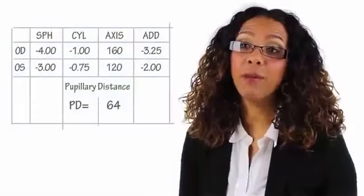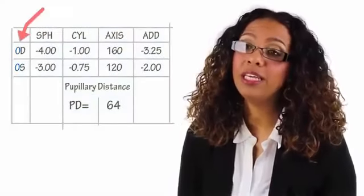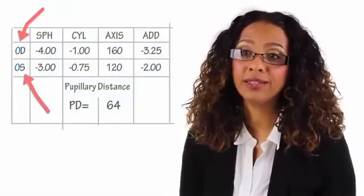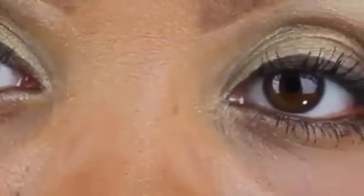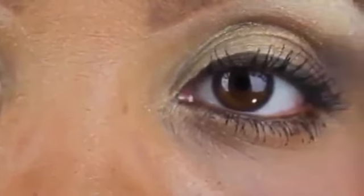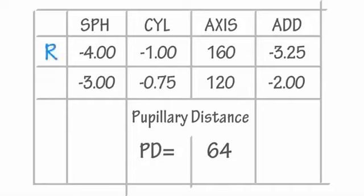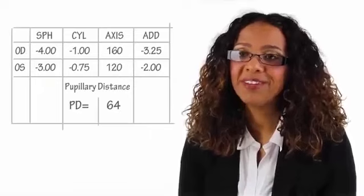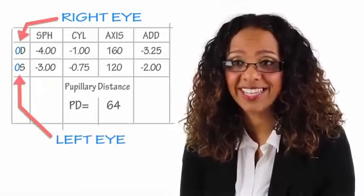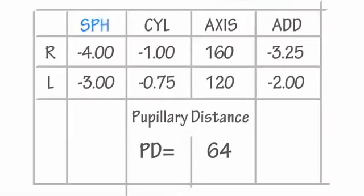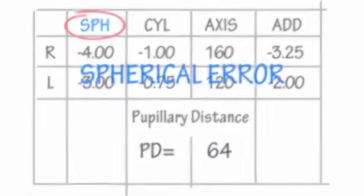The most common terms you will encounter are OD and OS. OD stands for right eye and OS stands for left eye. But sometimes prescriptions will just have an R and an L, which we all find easier to understand. So remember: OD means right eye and OS means left eye.